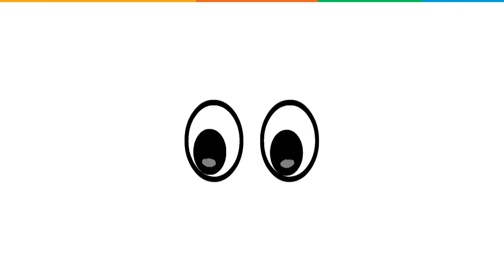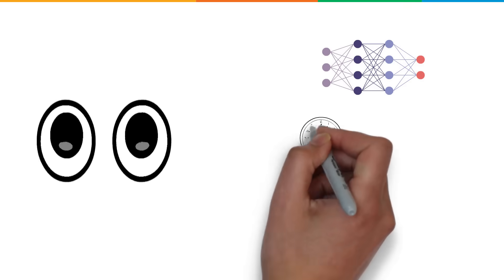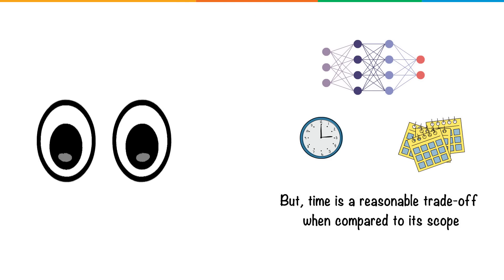You might wonder how long this training process takes. Honestly, neural networks may take hours or even months to train. But time is a reasonable trade-off when compared to its scope.